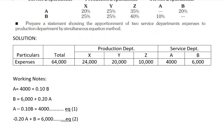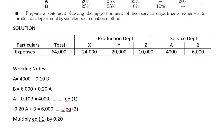To solve equations 1 and 2 using the linear equation method, we multiply equation 1 by 0.20. Multiplying through gives: 0.20A − 0.02B = 800. We call this equation 3.